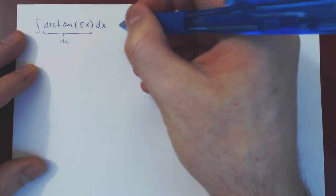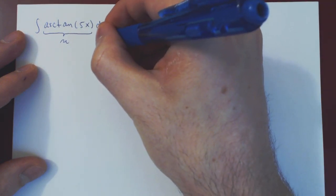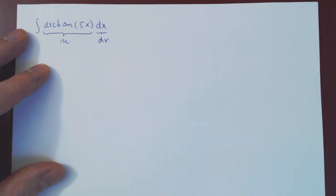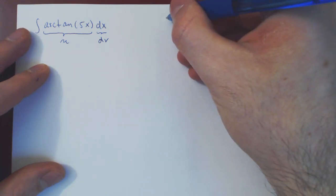So we let u be arctangent of 5x. As always, everything else is dv. So we must find du, so differentiate u with respect to x.